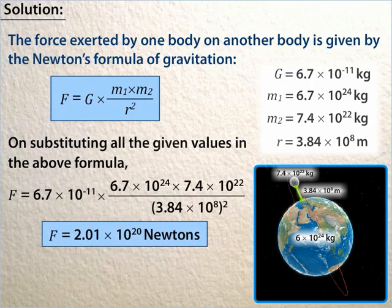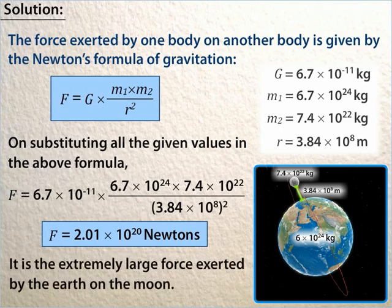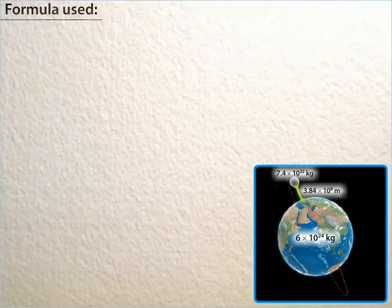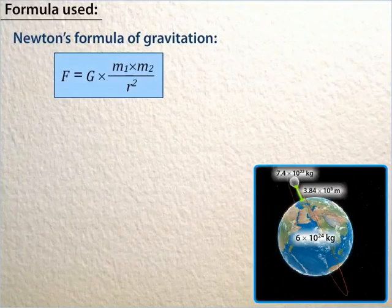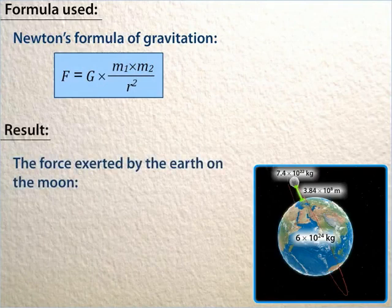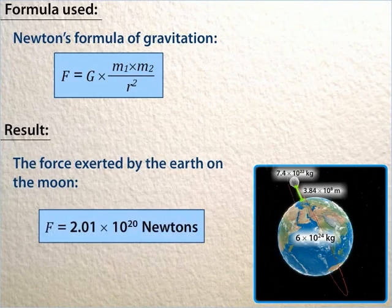we get F = 2.01 × 10²⁰ Newtons. This is an extremely large force exerted by the Earth on the Moon, which makes the Moon revolve around the Earth. Hence, using Newton's law of gravitation, we have found that the force exerted by the Earth on the Moon, F = 2.01 × 10²⁰ Newtons.